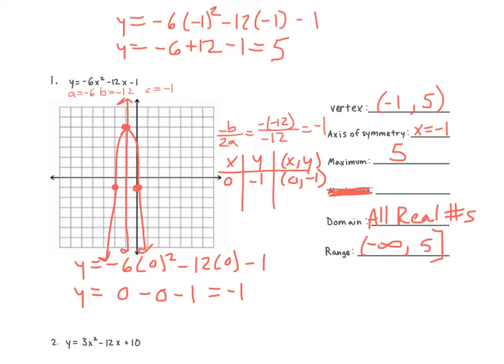It'll either start with negative infinity if the graph goes down, or it'll end with infinity if the graph goes up. But it won't have two infinity signs for our range. There will always be an infinity in the range — it'll be negative or positive. How do you know when the five goes first or the negative goes first? If it's pointing down, our range starts with negative infinity since that's the smallest number, and our graph ends at five. If the graph is going up, we would start at five and then end at infinity.